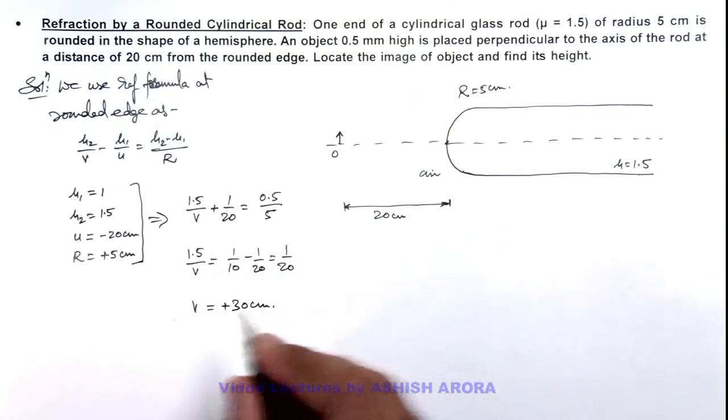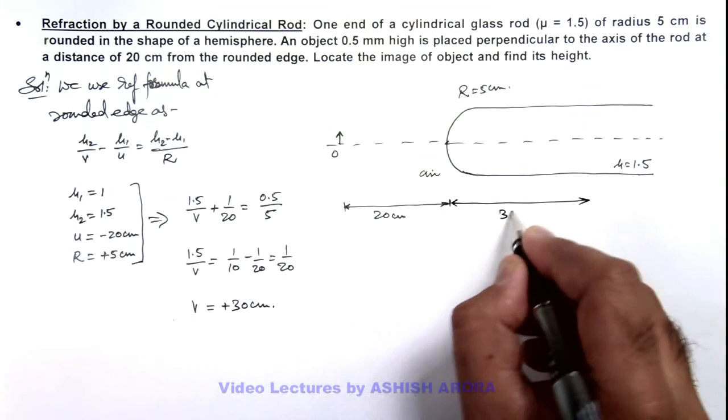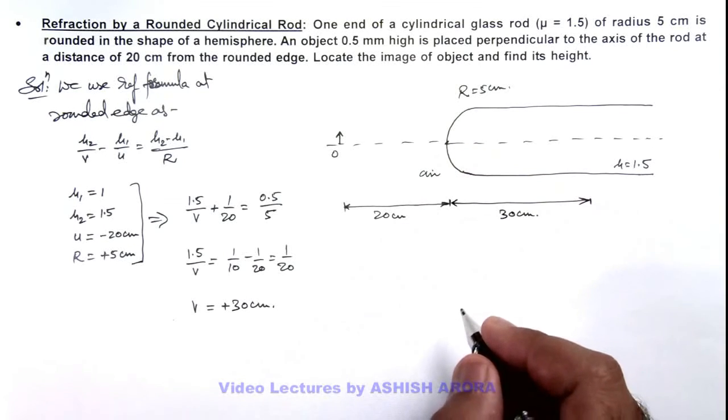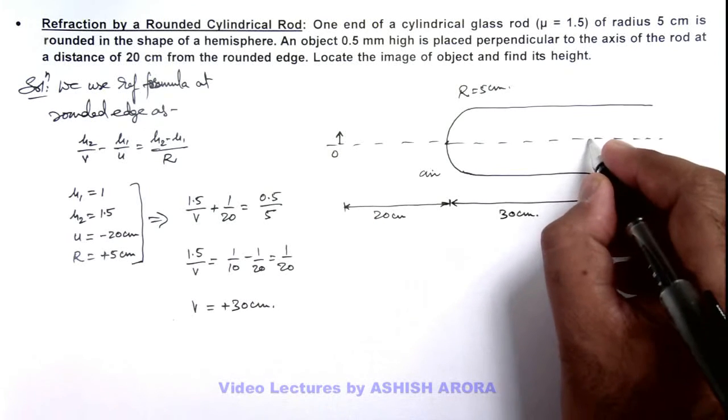That means the image is produced at a distance 30 centimeters to the right of the pole or optic center of this refracting surface. And as for being a real object, image is real, it is produced on the opposite side of principal axis.